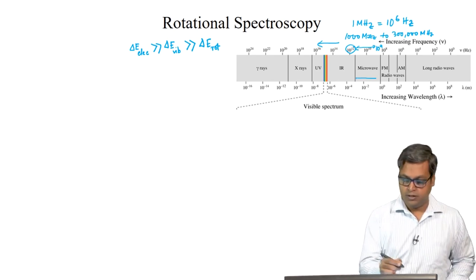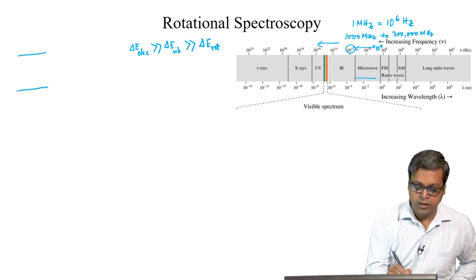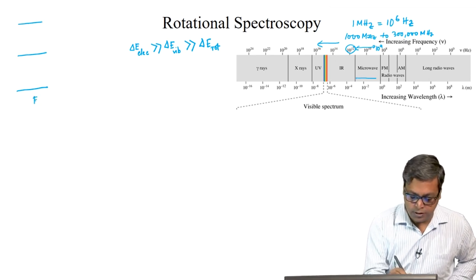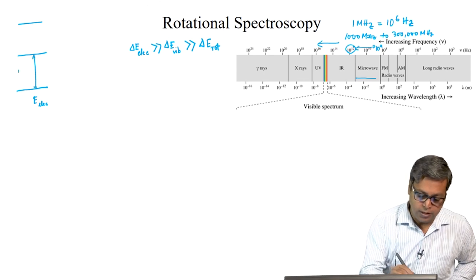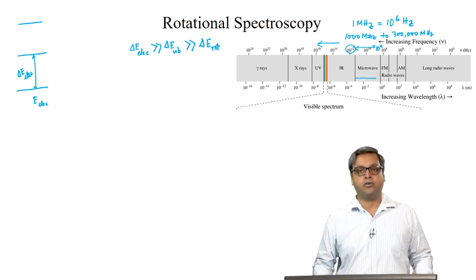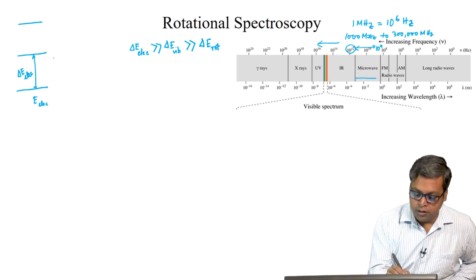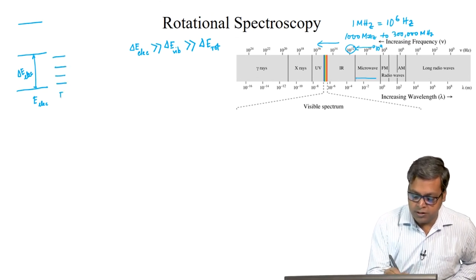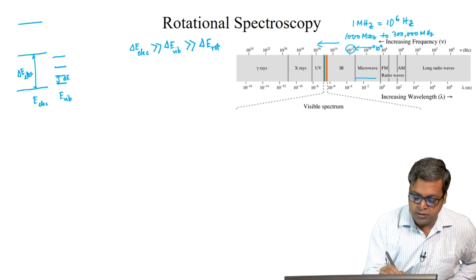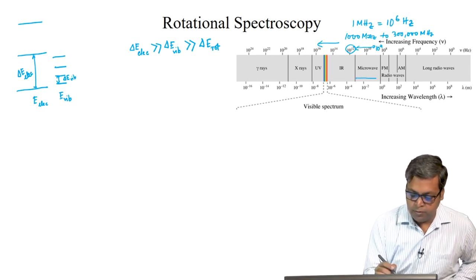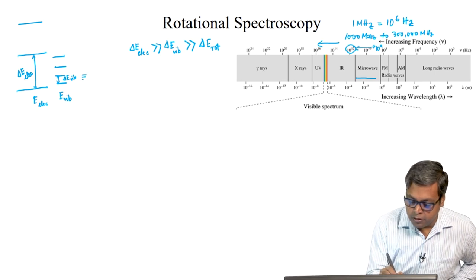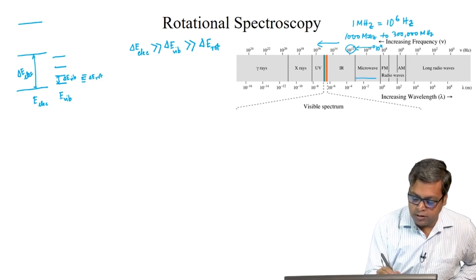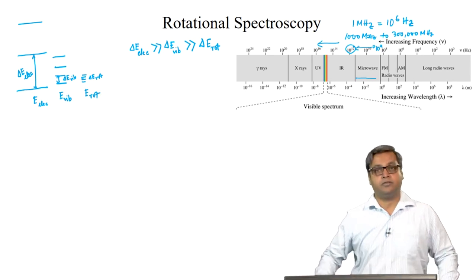If we draw the energy levels, we have the electronic energy levels E electronic. This is my delta E electronic. For each electronic energy level, we have different vibrational energy levels E vibrational. A transition here — that energy difference is delta E vibrational. And for each vibrational level, there are different rotational levels. This is delta E rotational, and we are plotting here the rotational levels.